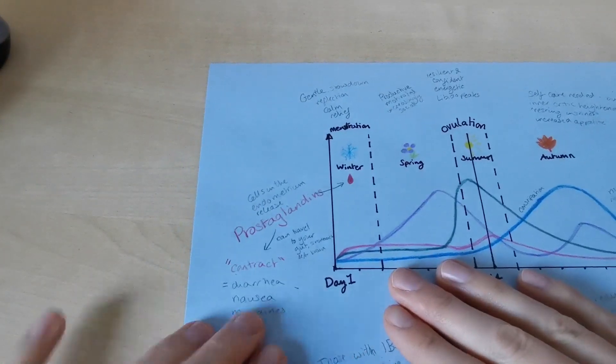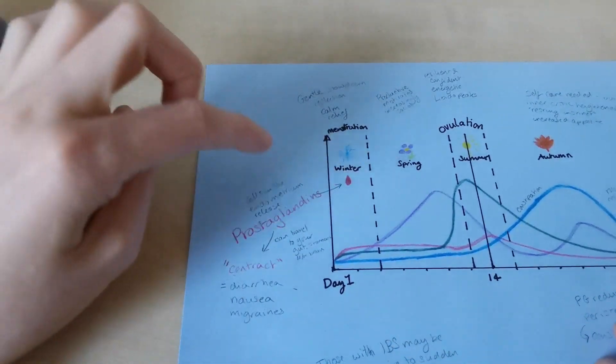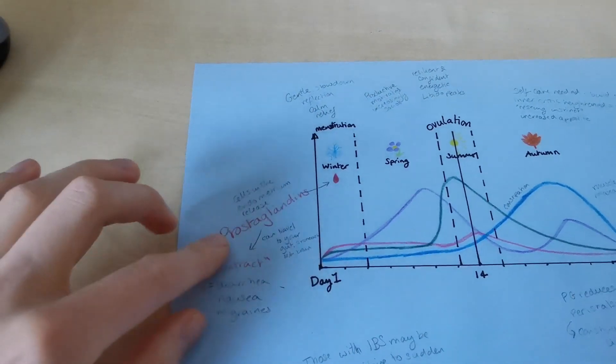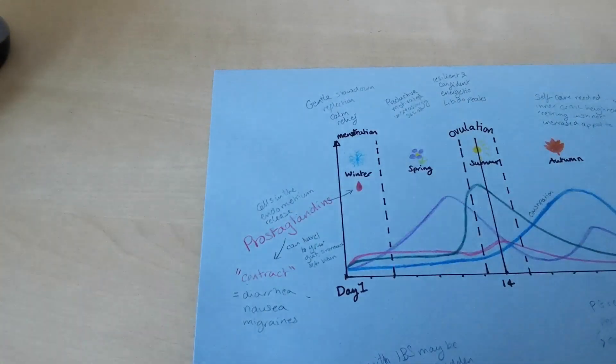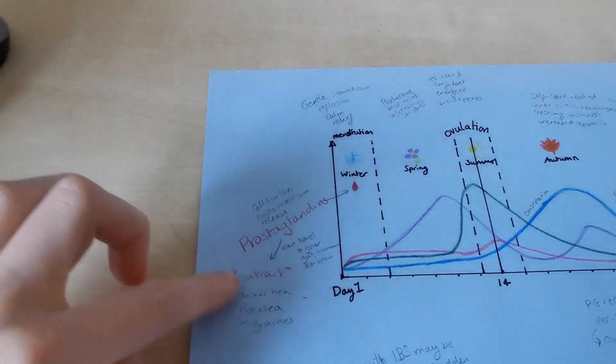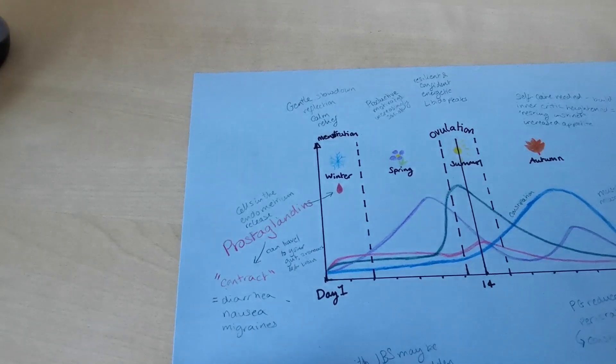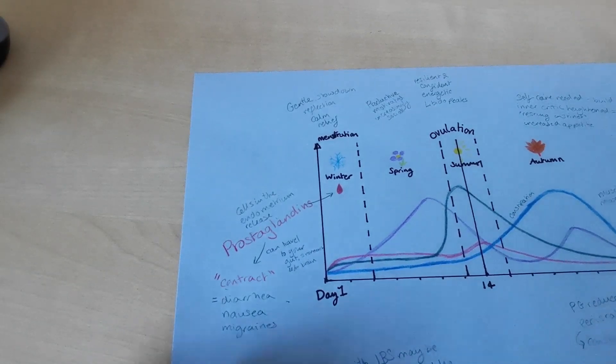And then when we're having our periods, the cells in our endometrium, the lining of the womb, as they shed, they can release prostaglandins. These actually trigger the contraction of the uterus to help, you know, help that lining leave. So very useful.